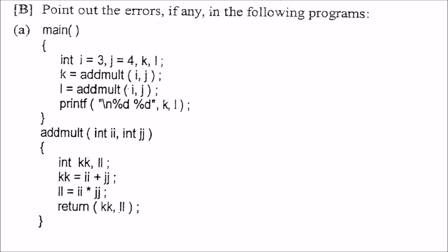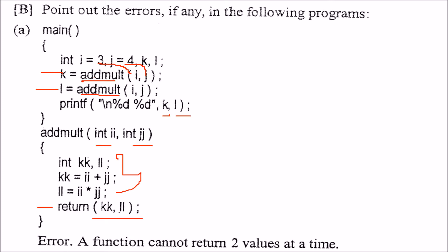We have to find out the error. We are sending 3 and 4 into function add_mult, and trying to print k and l. We are trying to find ii and jj — everything is fine up to that line. But we cannot return two values; we can only return one value in C. If you want to return more than one value, you have to use pointers.